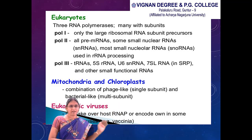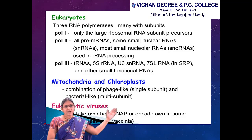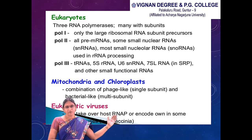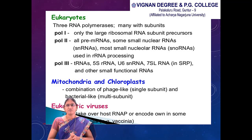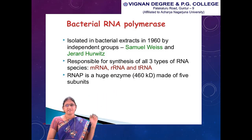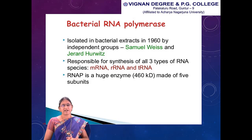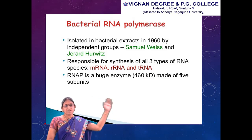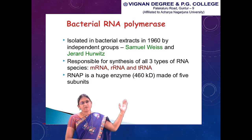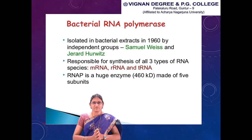Mitochondria and chloroplasts have a combination of phage-like and bacterial-like subunits. Eukaryotic viruses, which attack eukaryotic cells, can take over the host RNA polymerase or encode their own, as in some large viruses like vaccinia virus. Bacterial RNA polymerase was isolated in bacterial extracts in 1960 by independent groups, discovered by Samuel Weiss and Gerard Hurwitz. It is responsible for synthesis of all three types of RNA species: mRNA, rRNA, and tRNA.